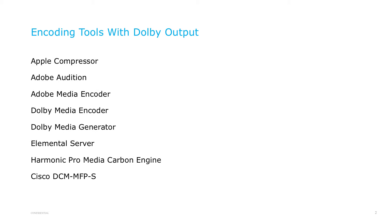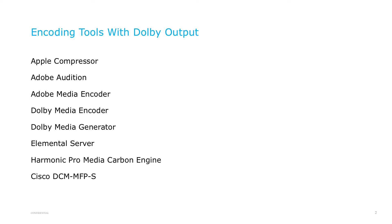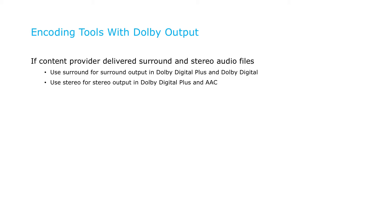Here's a list of other products you can use to output Dolby audio. Most have similar encoding parameters, so if you don't have Adobe Media Encoder, you still should be able to follow along. Note that if you receive both stereo and surround source files for your content — a common practice for studio content — you should use the surround source to create the surround outputs and the stereo source to create the stereo outputs.